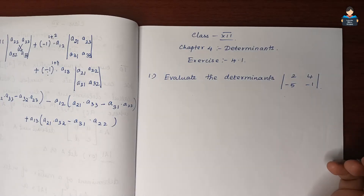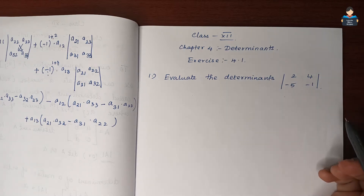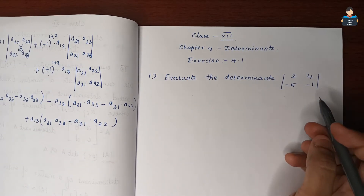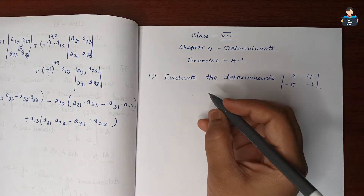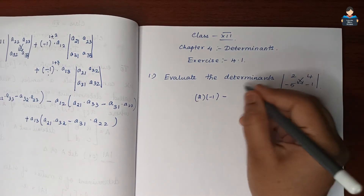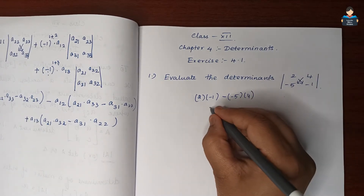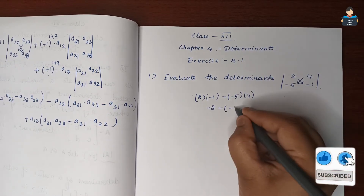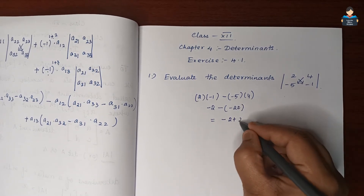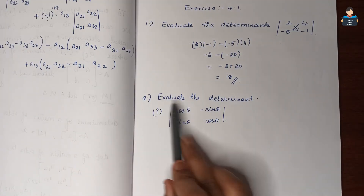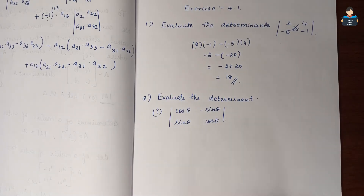Hello everyone, welcome to our channel. In this video we look at Class 12 NCERT Maths, Chapter 4 Determinants, Exercise 4.1, Question 1: evaluate the determinant. A 2×2 determinant is given, so we multiply diagonally. We get 2 into minus 1 minus minus 5 into 4, which gives minus 2 minus minus 20, so minus 2 plus 20 equals 18 as the answer.